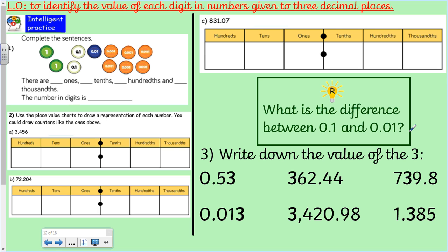Final one then. It says write down the value of the three. So in each number there is one three. You need to write down the value of it depending on what place it's in.